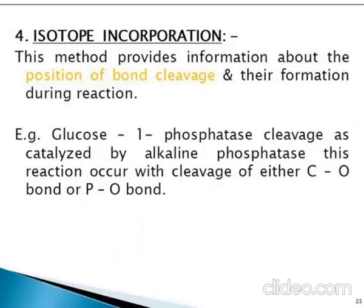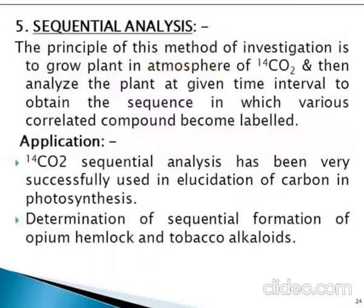The isotope incorporation method provides information about the position of bond cleavage and bond formation during a reaction. For example, glucose-1-phosphatase cleavage catalyzed by alkaline phosphatase — this reaction occurs with cleavage of either the C-O bond or the P-O bond. Sequential analysis: the principle of this method is to grow the plant in an atmosphere of 14CO2 and then analyze, after short time intervals, which sequence of correlated compounds becomes labeled.